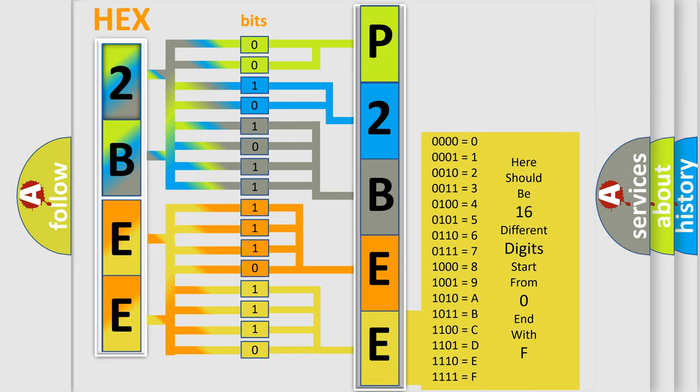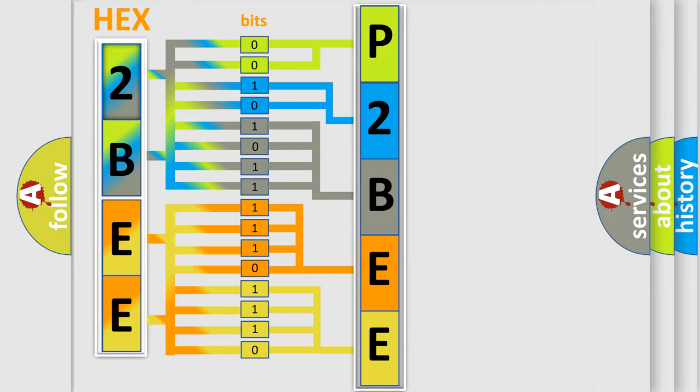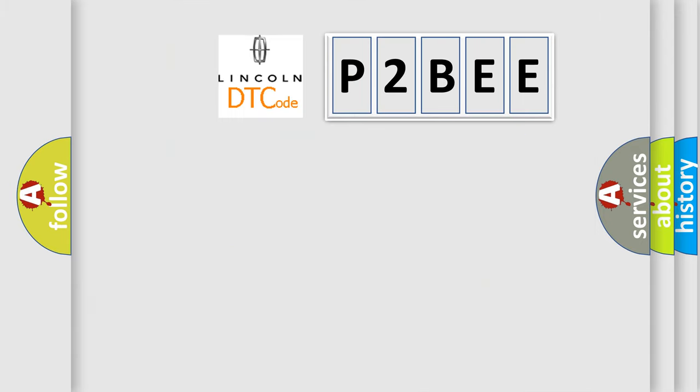We now know how the diagnostic tool translates the received information into a more comprehensible format. The number itself doesn't make sense if we cannot assign information about what it actually expresses. So, what does the diagnostic trouble code P2BEE interpret specifically for Lincoln car manufacturers?